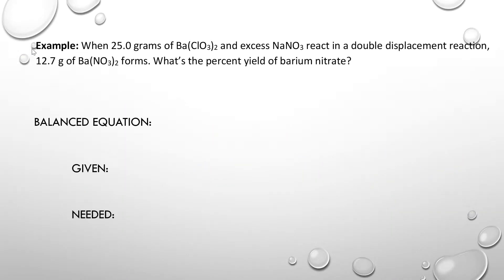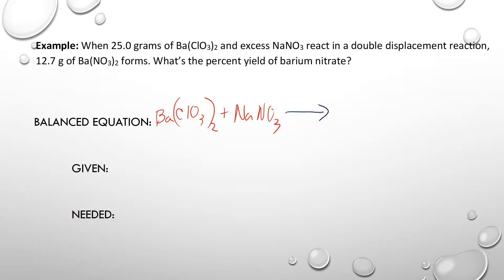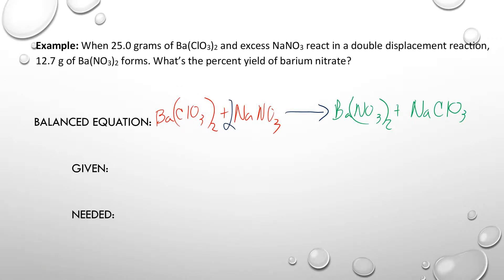That takes us to a chemistry question. In chemistry, we're going to expect that every time we put chemicals in, we get some chemicals out. The balanced equation here is Ba(ClO3)2 mixing with sodium nitrate, and that produces barium nitrate and sodium chlorate — with a coefficient of two in front of the sodium chlorate.